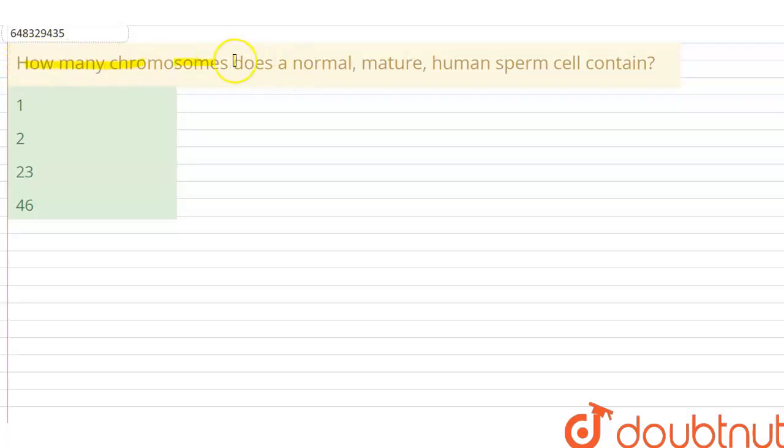How many chromosomes does a normal mature human sperm cell contain? So here we have a question about chromosomes, and we are asked how many chromosomes does a normal mature human sperm cell contain. The options given are 1, 2, 23, and 46. This is a very easy question.